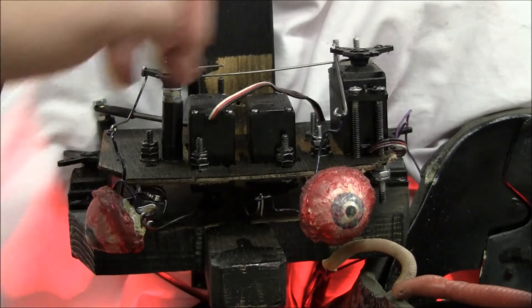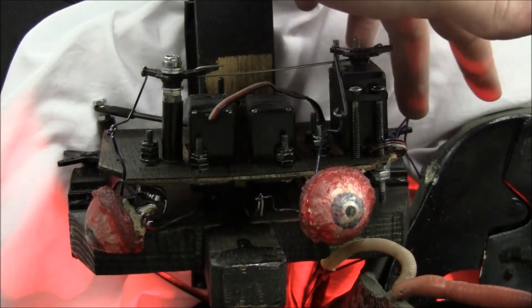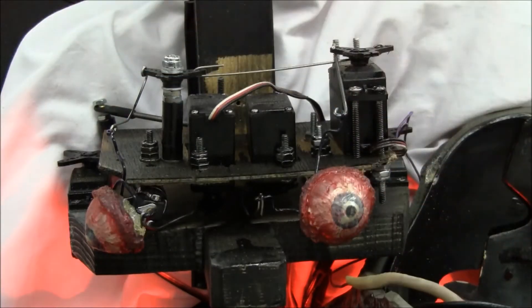Additionally, we have a chin servo and a servo that you can't quite see right here that wiggles a worm through the mouth of the mask.